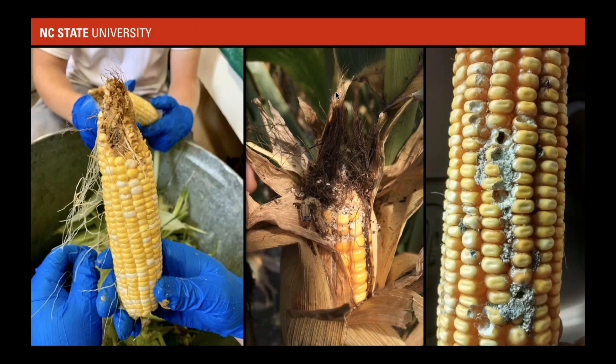We'll oftentimes see damage directly on the ear from later generations, with feeding very similar to corn earworm — larvae move into the tip of the ear and feed on kernels there. Sometimes we can see very severe damage as corn approaches maturity, with feeding even at the dent stage. In addition to direct damage, fall armyworm can transmit pathogens that cause problems with aflatoxins and mycotoxins, making them a very severe pest in the ear.